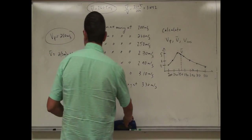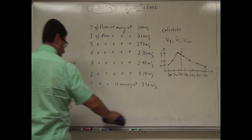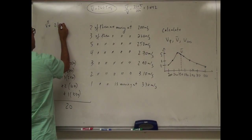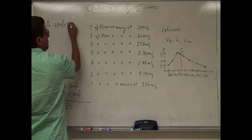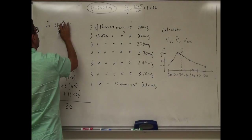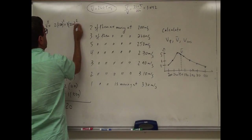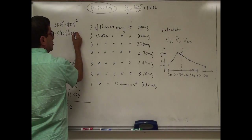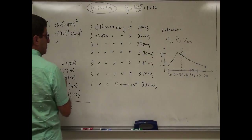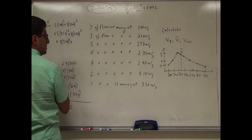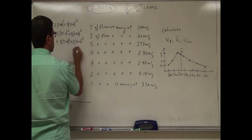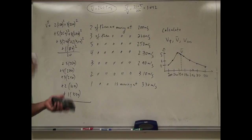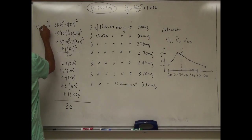Now how do you find the mean squared velocity? V² is the average of the squares: 2 times 200² plus 3 times 220² plus 5 times 250² plus 4 times 270² plus 3 times 290² plus 2 times 310² plus 1 times 330², all divided by 20 particles. Then I take the square root of all that to get V_rms.